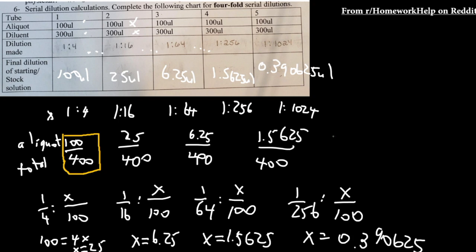Something to keep in mind is in these calculations, I didn't include any significant figures. So I'm not sure if your teacher will want that. Also, a question that you may have is what's the point of doing all these calculations and serial dilutions? Why don't we just, for example, if we needed a 1 to 1,024 ratio, why don't we just add this much amount into the test tube?